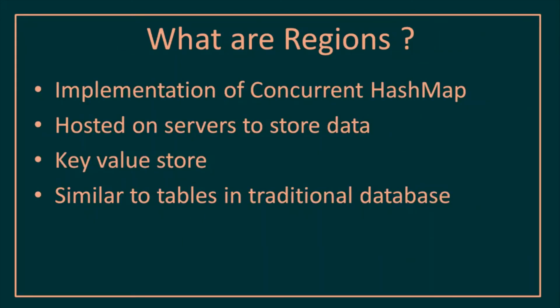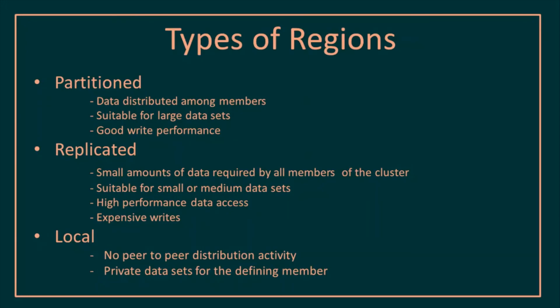Pivotal GemFire organizes data onto the servers in the form of regions. A region is a data structure like a concurrent hash map, storing data in key-value pairs where the key is always unique. You can consider regions as tables, similar to tables in a traditional database. The first type of region is the partition region. As the name suggests, data is partitioned among multiple members of the cluster. It is suitable for large data sets — for example, in an e-commerce application with a large amount of data such as customers and orders. It has really good write performance since not all servers contain all the data; writes are performed only on the servers where the data is present.